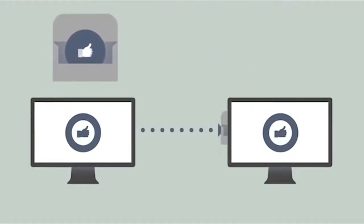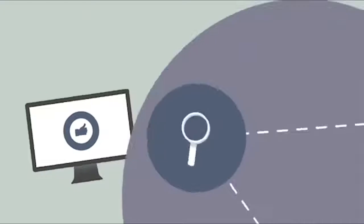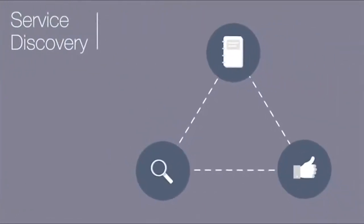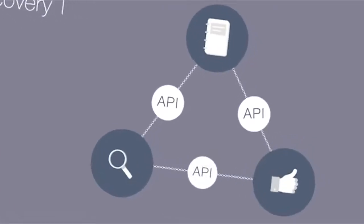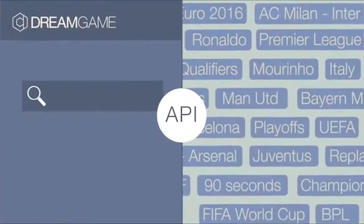But before they can work together, they have to find one another. They do this by using something called Service Discovery, which creates a roadmap for these and many other microservices to communicate. When microservices find each other, they communicate using an application programming interface or an API.